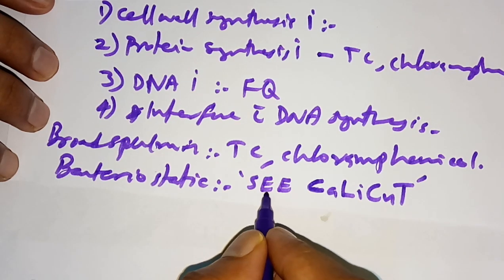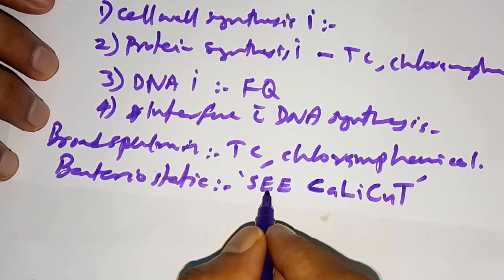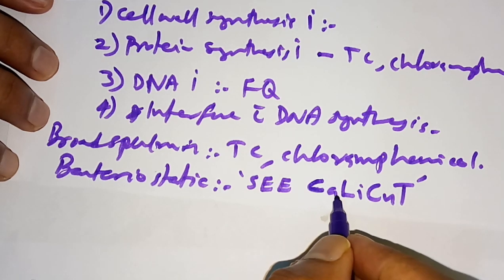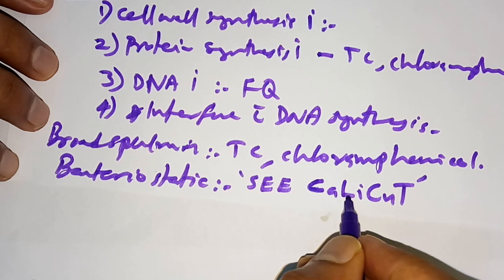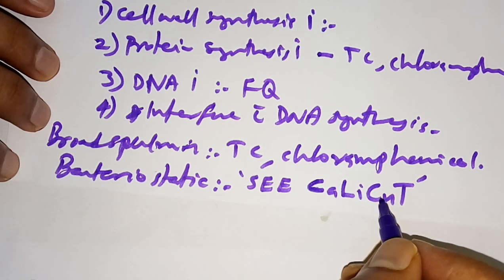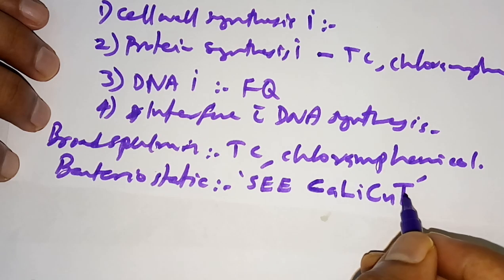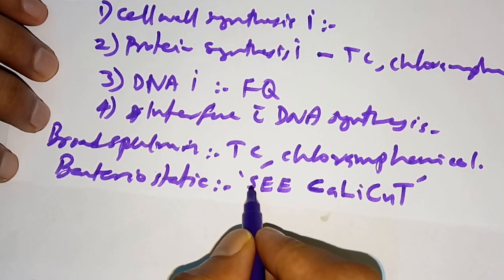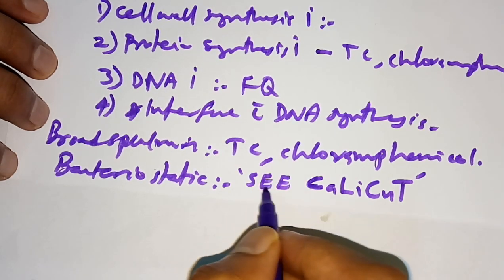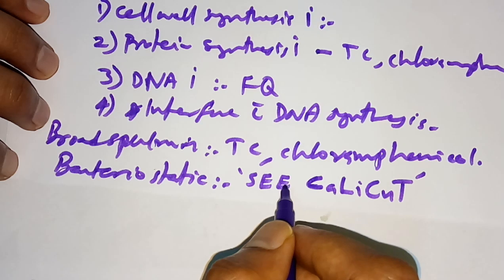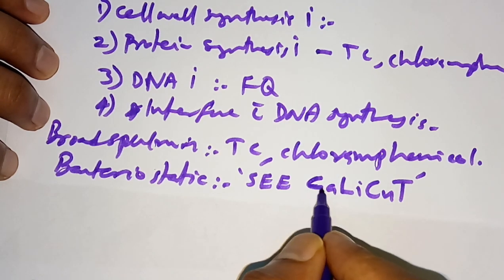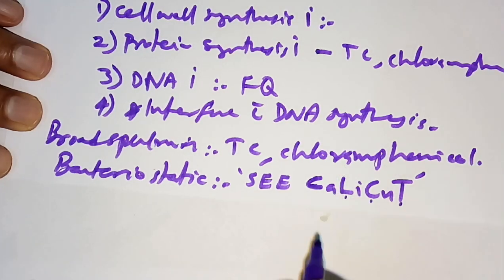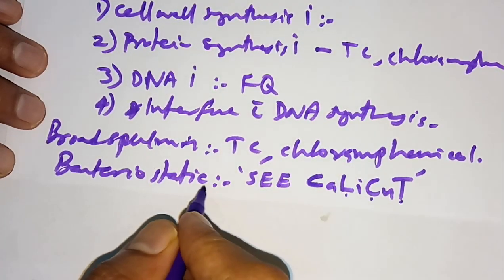The mnemonic for bacteriostatic antibiotics is: S for sulfonamides, E for erythromycin, E for ethambutol, C for clindamycin, L for linezolid, C for chloramphenicol, T for tetracycline. These are the examples of bacteriostatic antibiotics to remember.